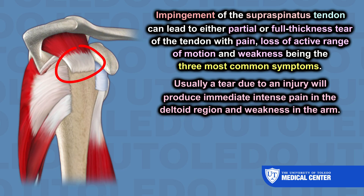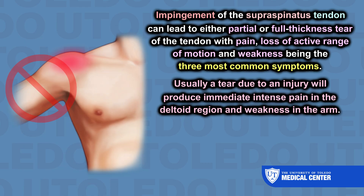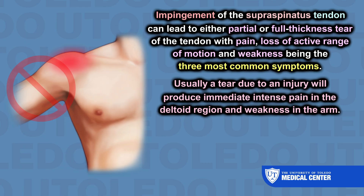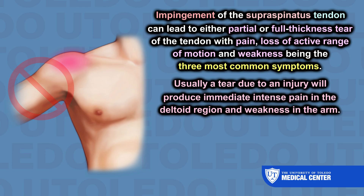Impingement of the supraspinatus tendon can lead to either partial or full thickness tear of the tendon, with pain, loss of range of active motion, and weakness being the three most common symptoms. Usually, a tear due to injury will produce immediate intense pain in the deltoid region and weakness of the arm.